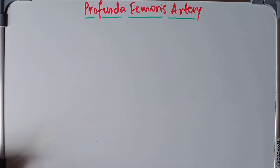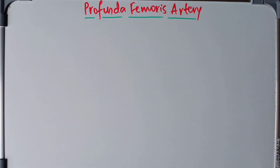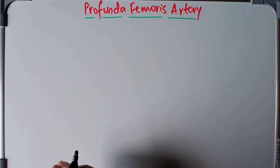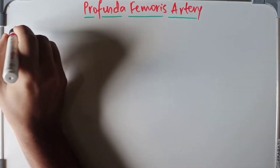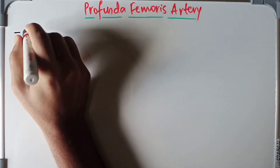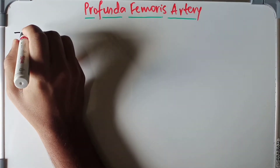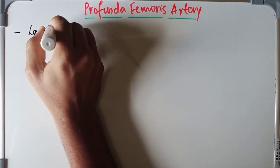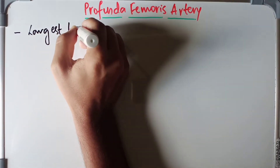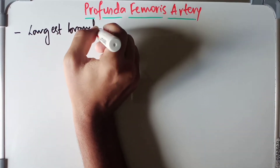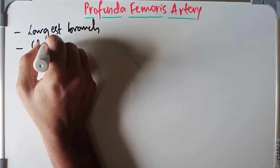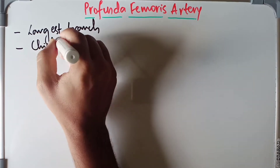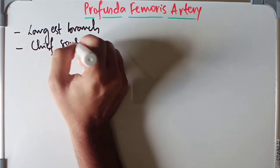Today we are going to discuss the anatomy of the profunda femoris artery. It is one of the largest branches of the femoral artery and is the chief source of blood supply to all three compartments of the thigh.